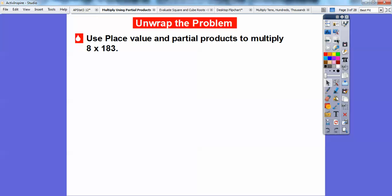Use place value and partial products to multiply 8 times 183. Let's first estimate this to the nearest 100. So 183 rounds up to 200, it's closer to 200 than it is to 100. So 8 times 200, well 8 times 2 is 16 and then there's hundreds right here, so it's 1,600. So 1,600 right there.